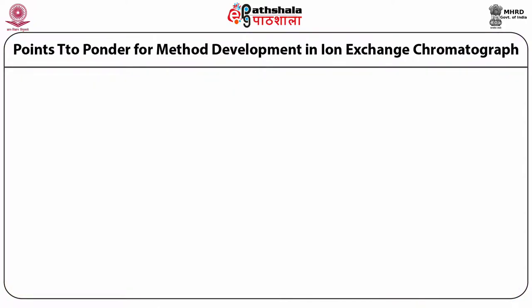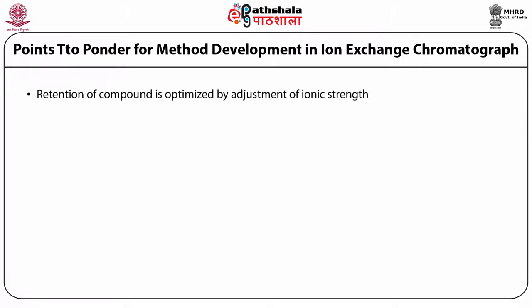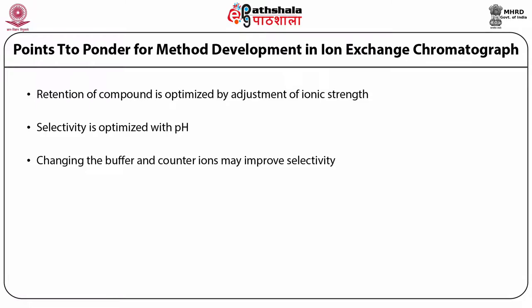After knowing the details of the various components used in ion exchange chromatography, we have to develop a method suitable for analysis of compounds. There are some key points that need to be kept in mind. First, retention of a compound is optimized by the adjustment of ionic strength of the mobile phase. Second, the selectivity is optimized with the pH. Third, changing the buffer and the counter ions may improve the selectivity criteria.